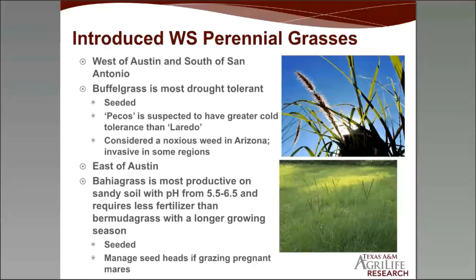West of Austin and south of San Antonio, in South Texas, buffel grass will be your most drought-tolerant option. The cultivar Pecos is suspected to have greater cold tolerance than the cultivar Laredo. Be aware that any plant out of place is considered a weed — buffel grass is a noxious weed in Arizona and can be invasive in some regions. Use good cultural practices like cleaning equipment to avoid spreading it.